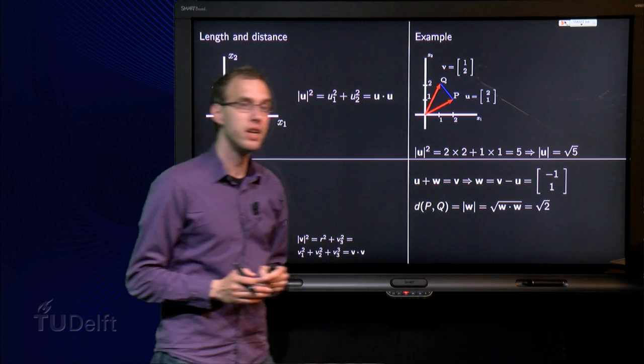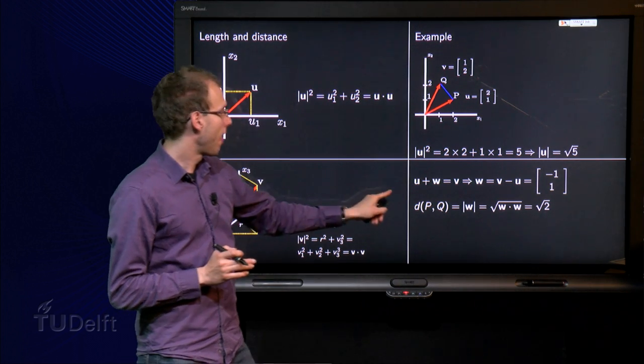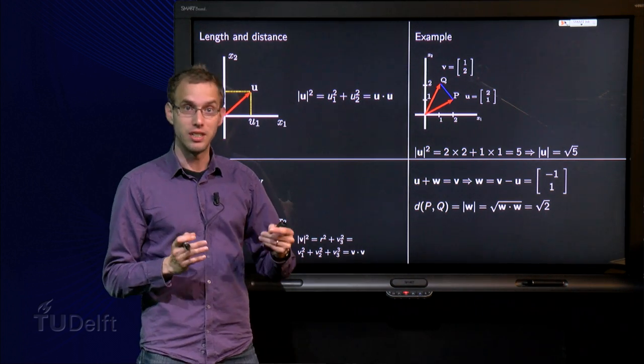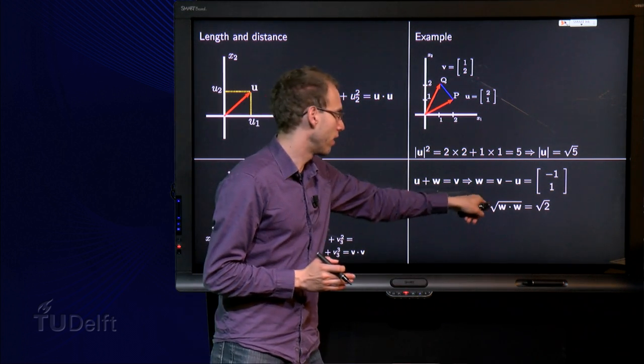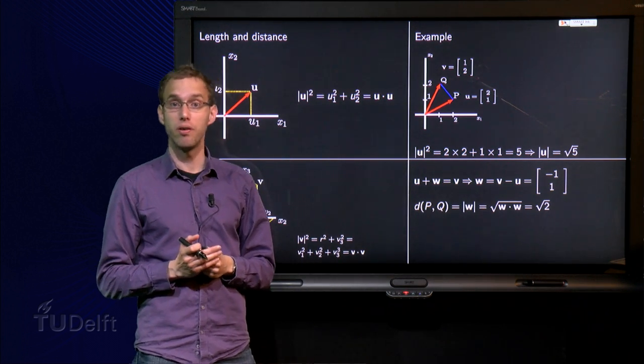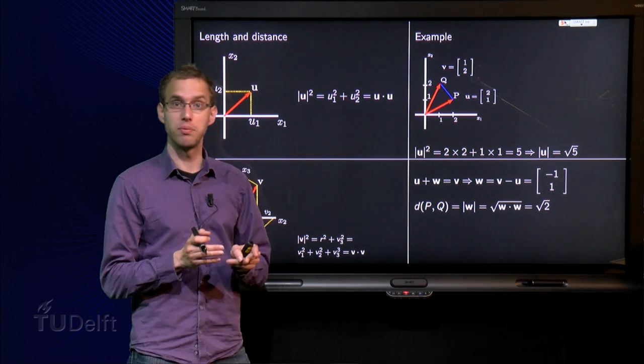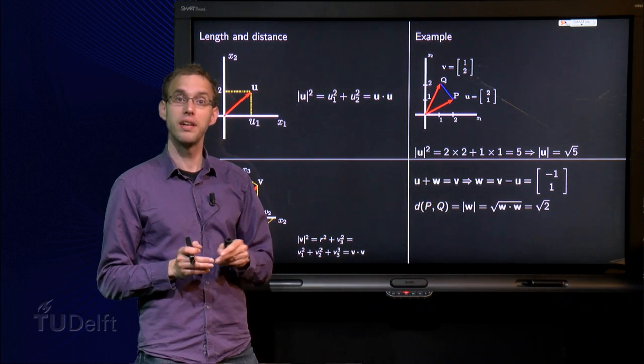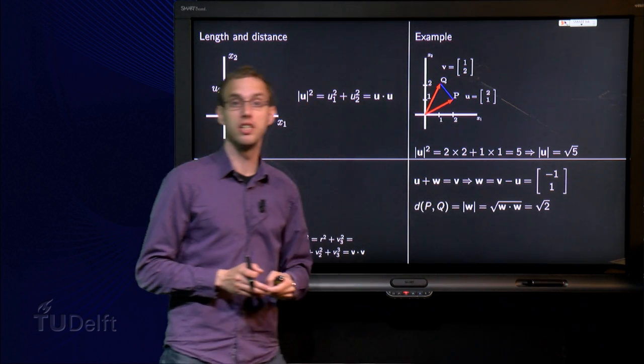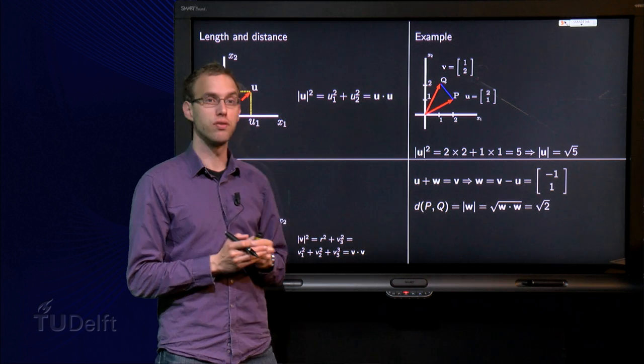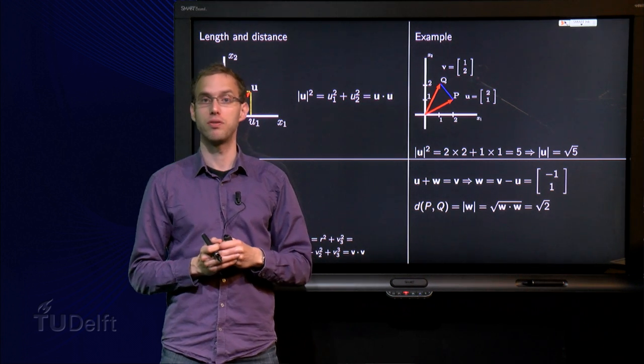So now we know w. Then we can compute the distance from p to q. It is just the length of the vector w, the square root of the inner product of w with itself, which equals (-1) times (-1) plus 1 times 1, which equals 1 plus 1 equals 2. So the length of w is the square root of 2, and the distance from p to q is the square root of 2.